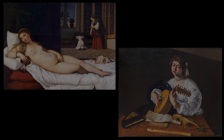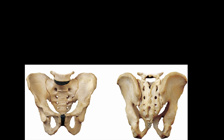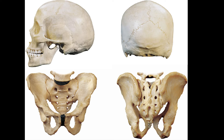So let's start with one of the most reliable indicators of sex: the bones of the pelvis, followed by the skull. These two bony regions exhibit the most overt sexually dimorphic patterns.